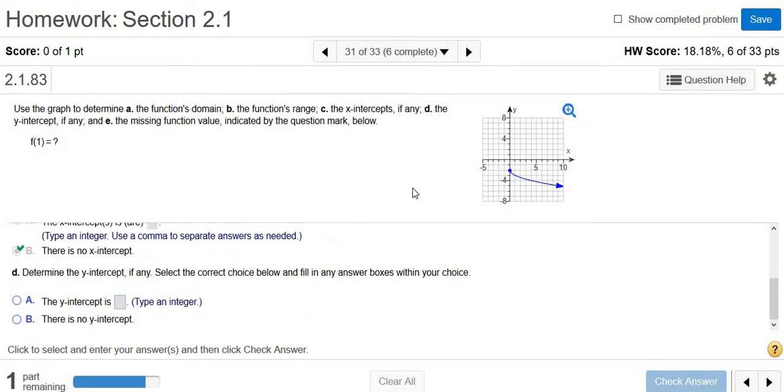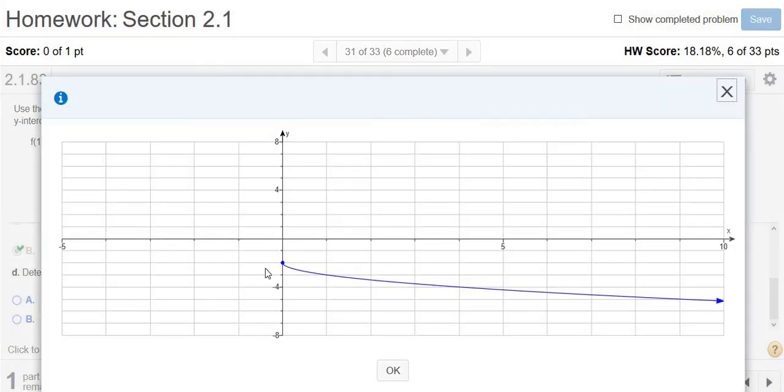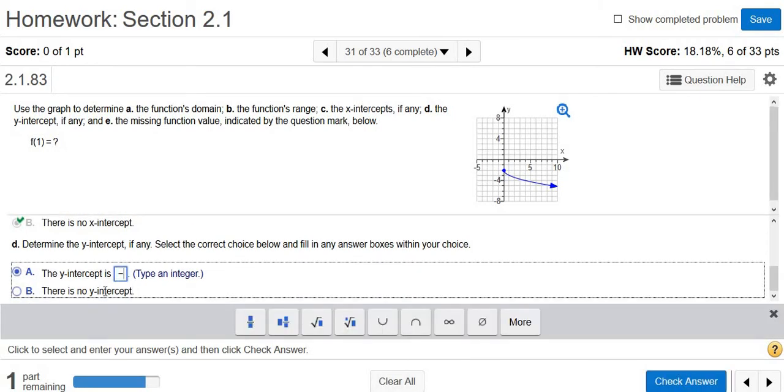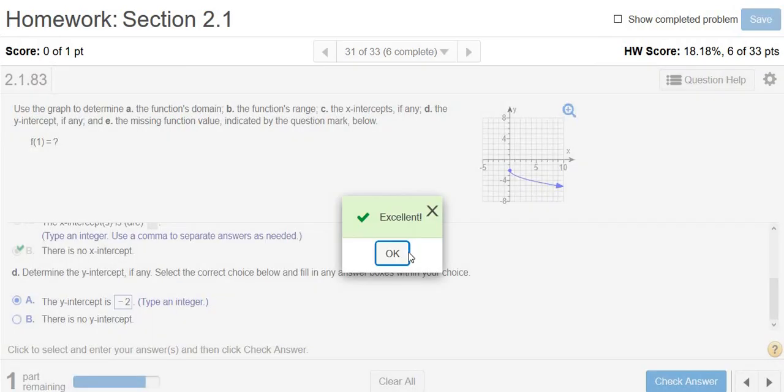And then it says determine the y-intercept. Well, the y-intercept is where the graph touches or crosses the y-axis. So it looks like negative 2, right there. Negative 2, that would be the y-intercept. So y-intercept negative 2. Click check answer, boom.